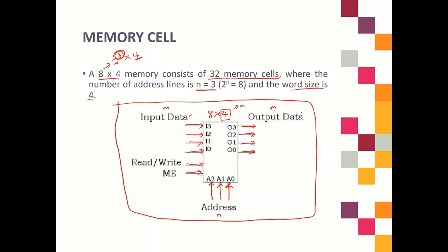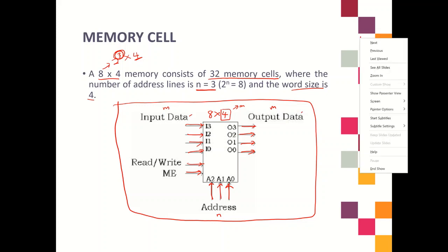We can also draw a simplified memory diagram. We use the simplified version because the values for N and M may be large numbers — for example, if your address line is 21, you don't want to draw all 21 lines. So we use a simplified method to draw the memory diagram.